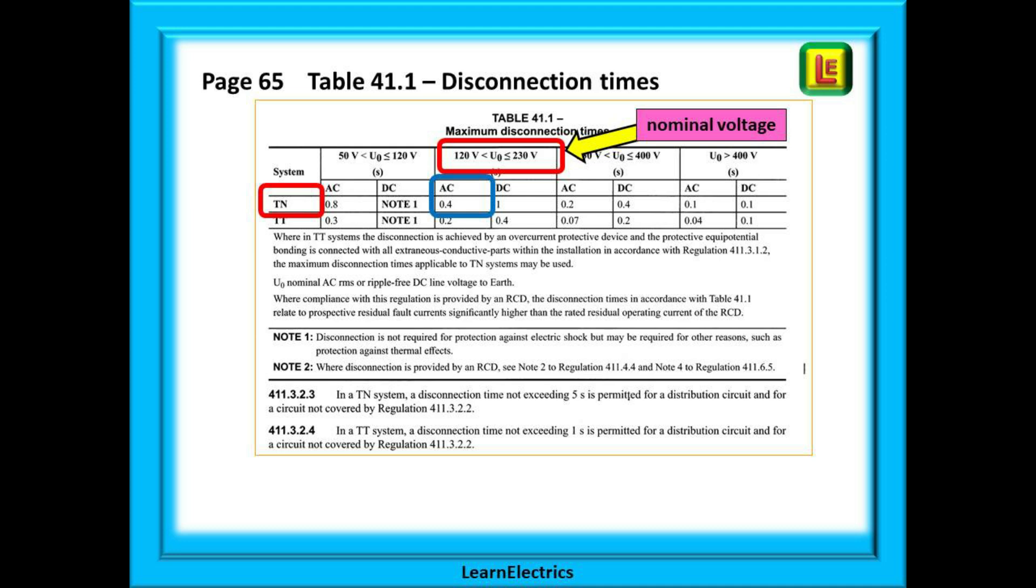For the kitchen, a 230 volts nominal, we will use the second block of data. The symbols at the top say the nominal voltage is over 120 volts and up to and including 230 volts. On the left, we can choose the earthing system. Let us use TN which is shorthand for TNCS or TNS. Where the column and row cross, we have 0.4 seconds. This is our maximum disconnection time for that particular installation, 0.4 seconds.